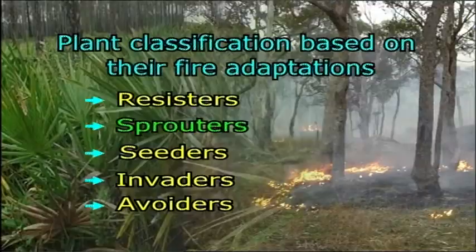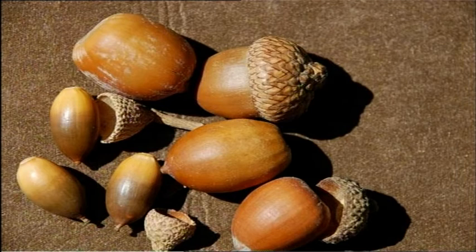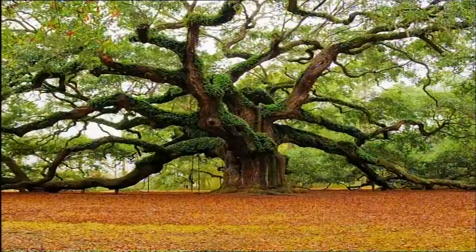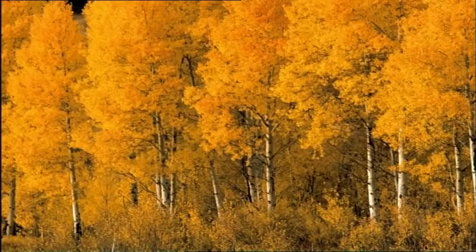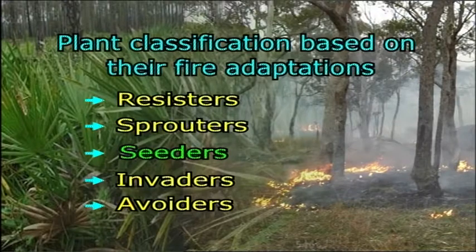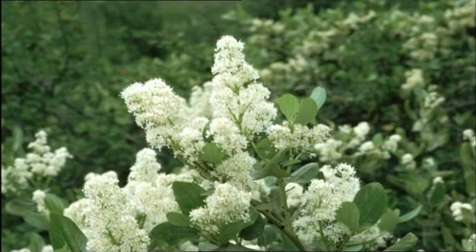Sprouters are species that endure fire by re-sprouting from their roots, trunks, limbs, or crown after a burn. Many shrubs are sprouters, and some have hard-shelled seeds relying on fire to crack them open. Examples include oak, aspen, and madrone. Seeders are adapted to evade fire by shedding lots of seeds that sprout after fire. Many seeders are dependent on fire to create the habitat needed for their seedlings to sprout and grow in a less competitive environment. Examples include buckbrush and lodgepole pine.